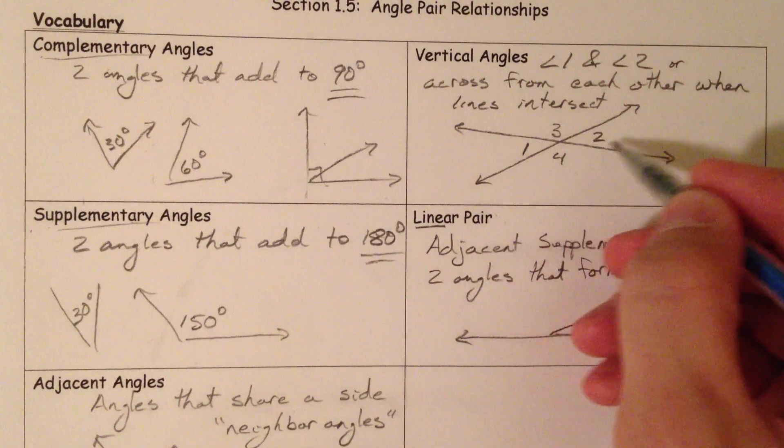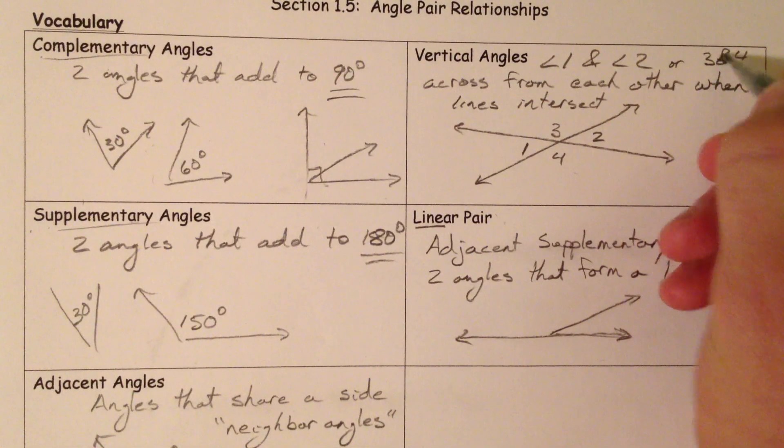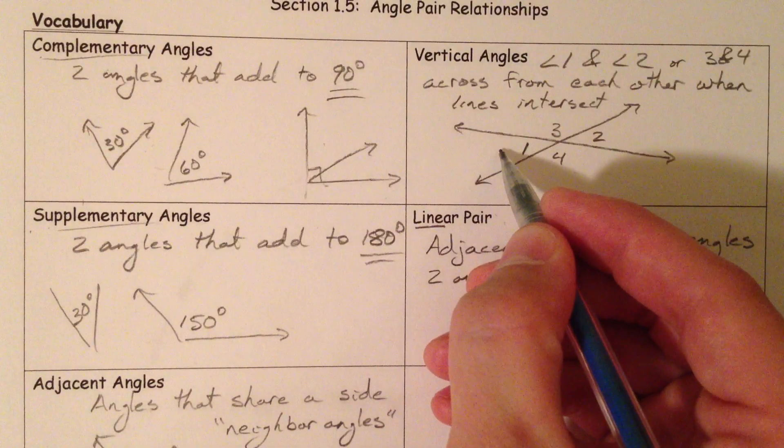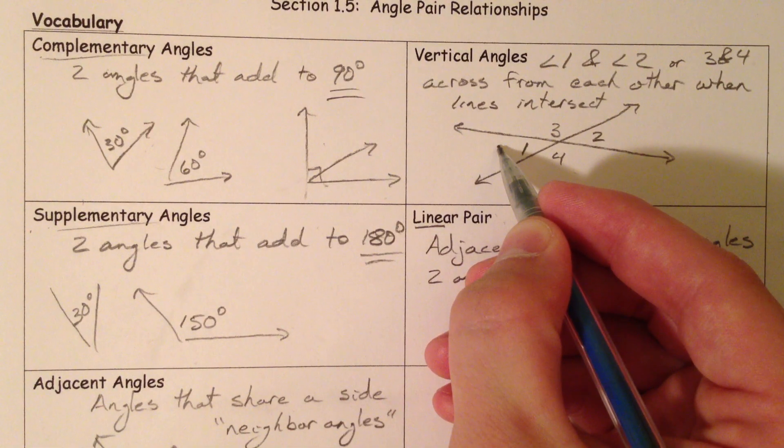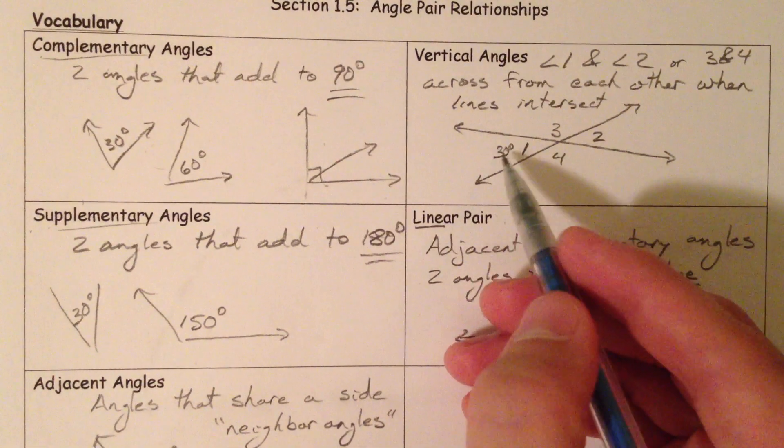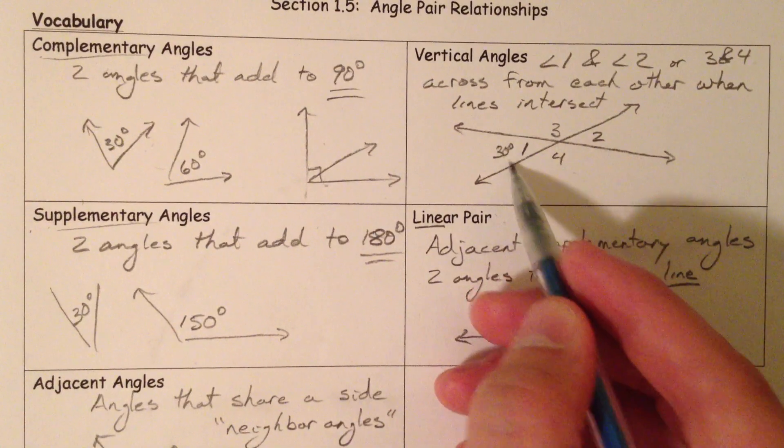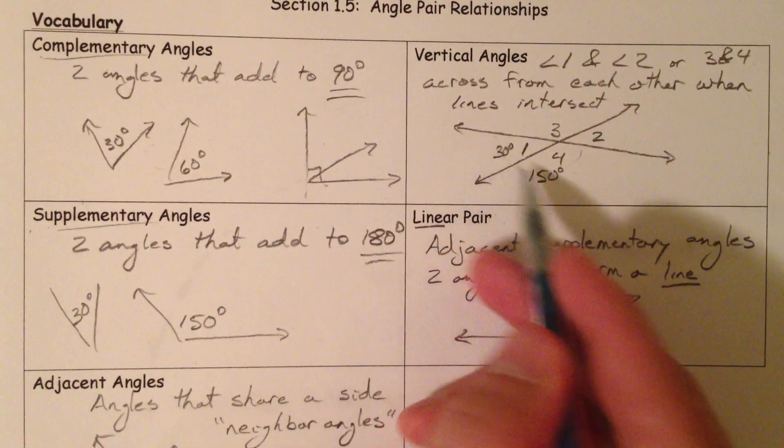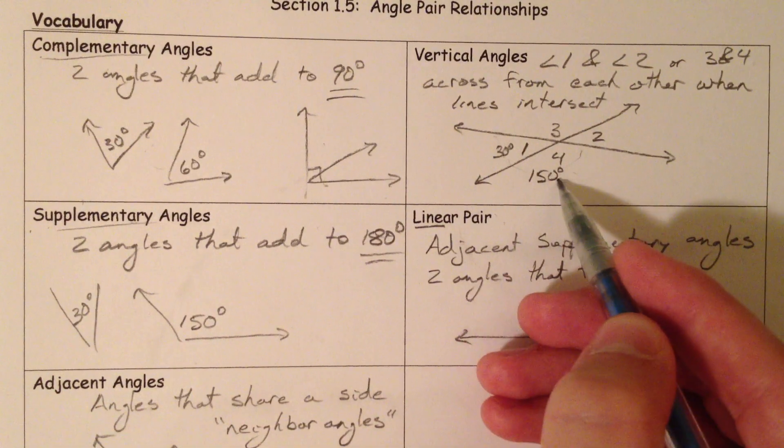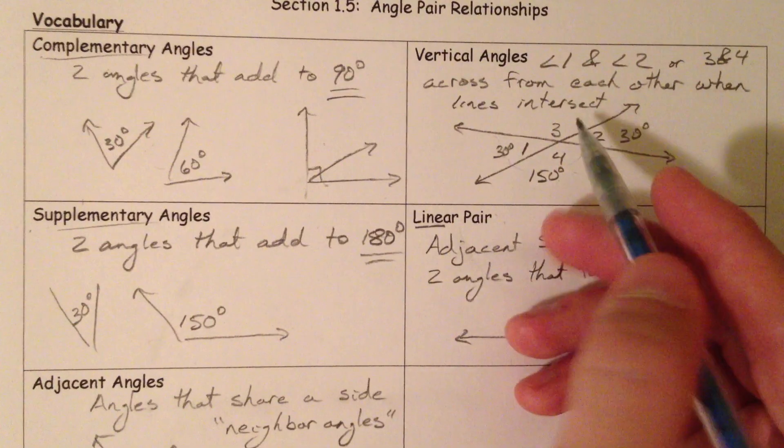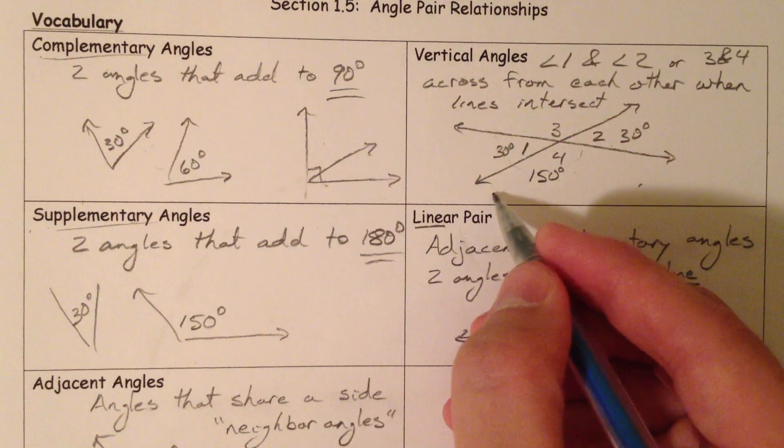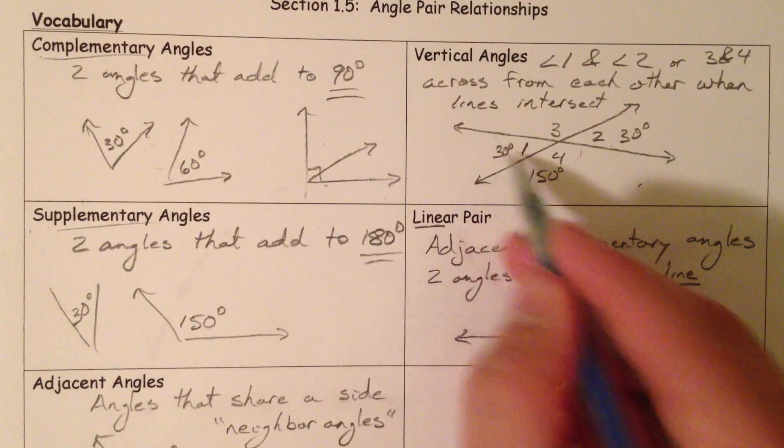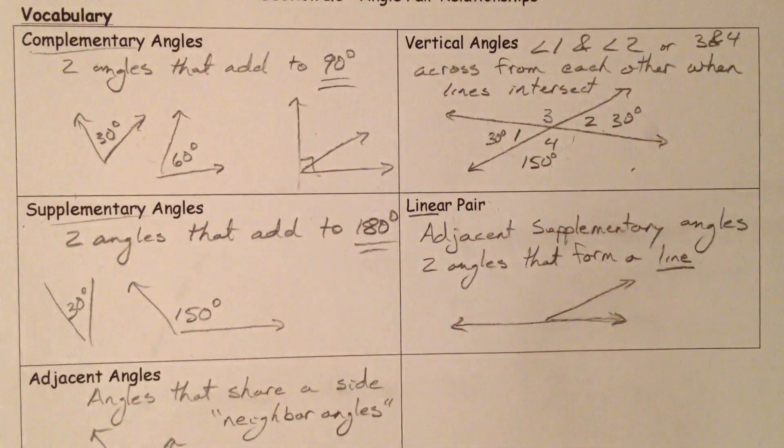And so one and two, or three and four. Now, something special about vertical angles, let's just say that this was 40 degrees, 30 degrees. Let's say it's 30. If this is 30, then this angle four forms a linear pair. And so this is going to be 150 because 30 plus 150 is 180. And if this is 150, then this is going to be 30 again. And so angle one, vertical angles are always congruent. They will always be congruent because this will always be 180 minus that and this will always be 180. And so they're going to be across from each other.